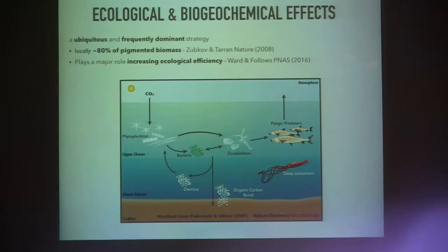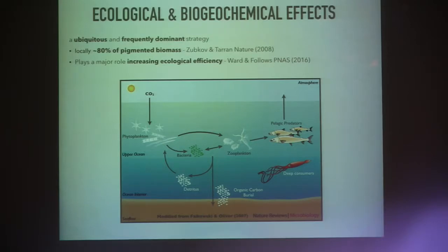Spoiler alert — I'm going to tell you what happens when I run the mixotrophic model. Mixotrophs are ubiquitous. They take up 80% of pigmented biomass in some regions. They're also doing a major amount of grazing on bacteria, and they play a major role in increasing ecological efficiency and carbon export.